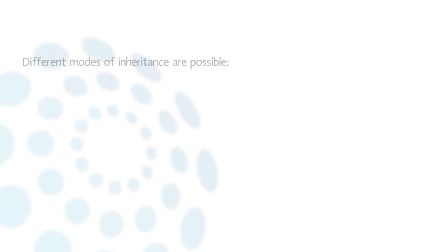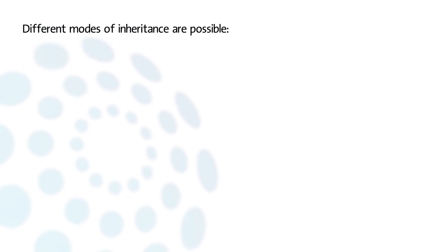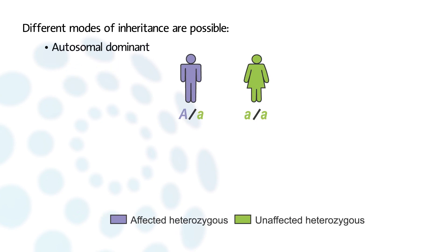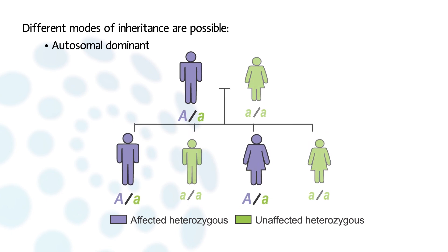Depending on the gene involved, different modes of inheritance are possible. Autosomal dominant: a disease is transmitted in the autosomal dominant mode if the gene in question is carried by an autosome and if the presence of a single mutated allele is sufficient for the disease to manifest. Heterozygous individuals for the causative gene are diseased.